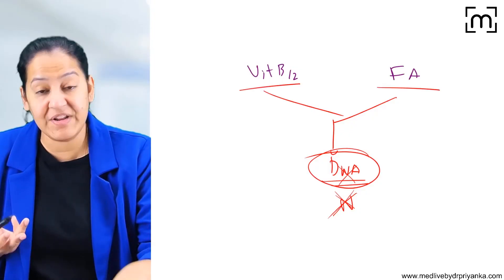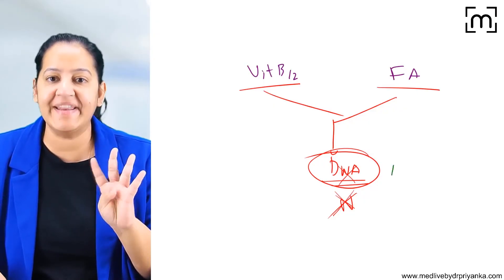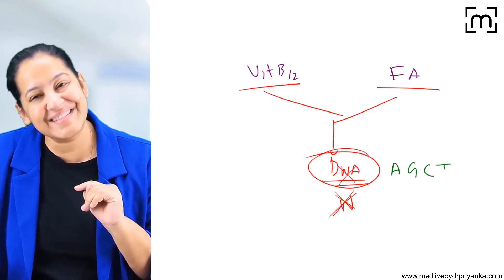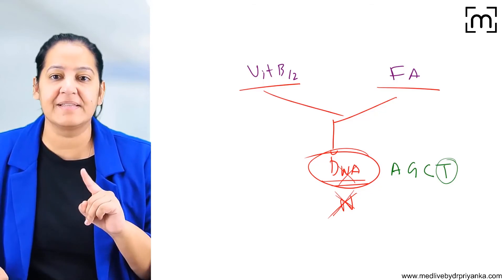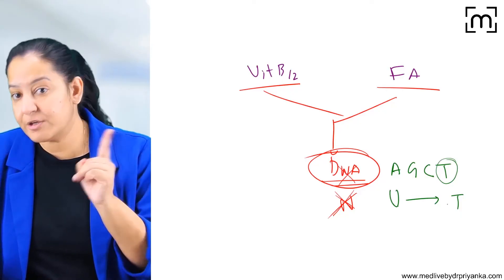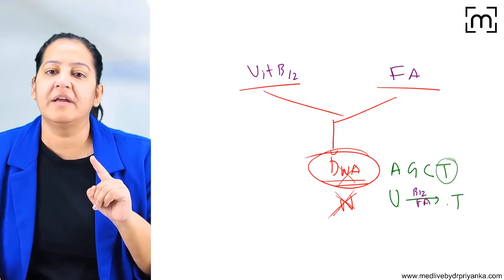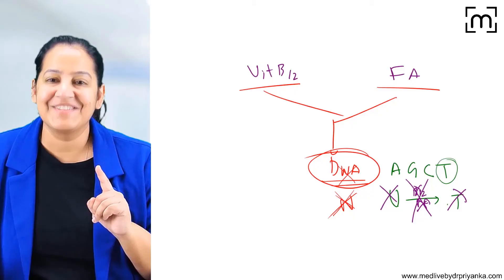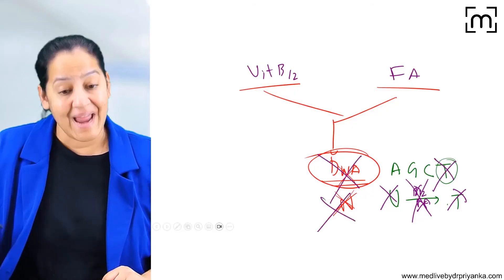Which step of DNA synthesis requires vitamin B12 or folic acid? DNA has four nucleotides: adenine, guanine, cytosine, and thymidine. Thymidine is synthesized from uracil. For the conversion of uracil to thymidine, both vitamin B12 and folic acid are required. If either or both of them are deficient, uracil will not convert into thymidine. So thymidine will not form, DNA will not form, the nucleus will not form, and that leads to anemia.